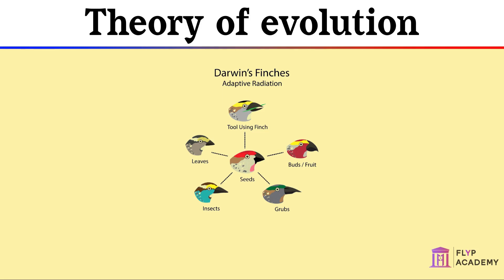Darwin's theory proposed that evolution occurs due to a process called natural selection. This means that those organisms best suited to their environment will live longer and breed more, having more chance to pass on their characteristics, leading to the next generation more commonly showing the characteristic that helped survival. Darwin proposed that the change in characteristics of a species was gradual and over many generations.